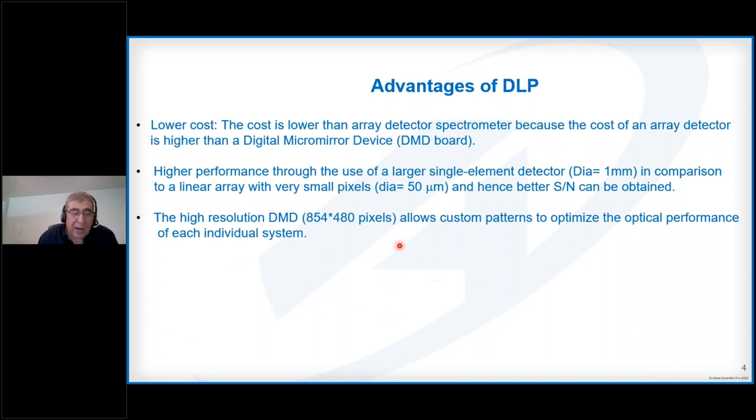Also, there is a high-resolution DMD board, which in one case could be 854 by 480. This allows custom patterns to optimize what you want to do. If you're only interested in certain regions of the spectrum, you can program it so that only certain regions are scanned. The ability to program is an advantage for DLP spectrophotometers.